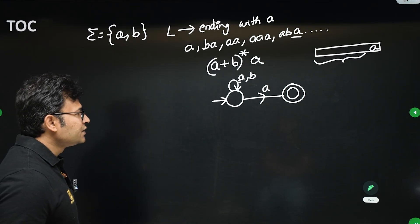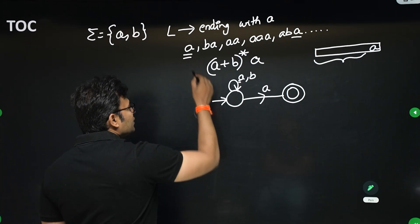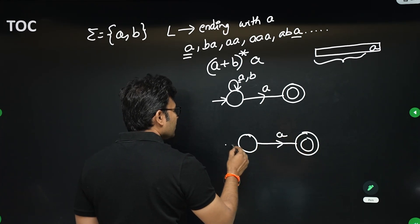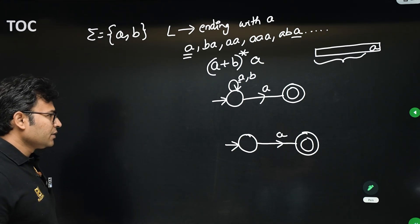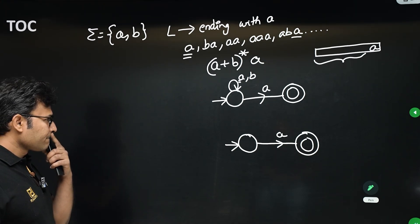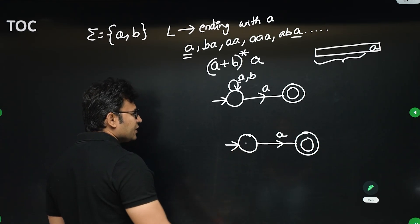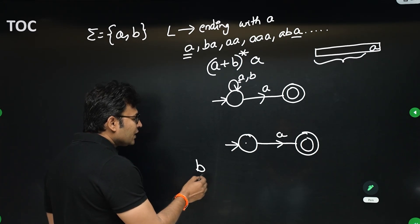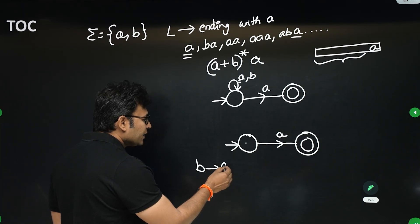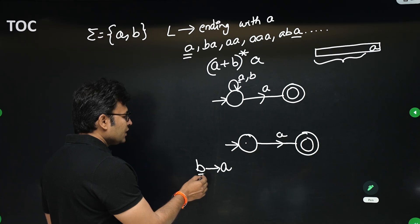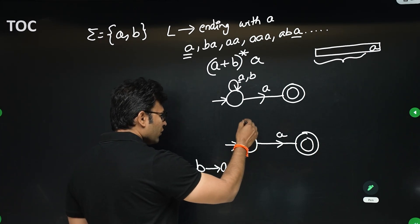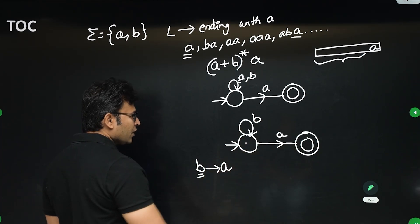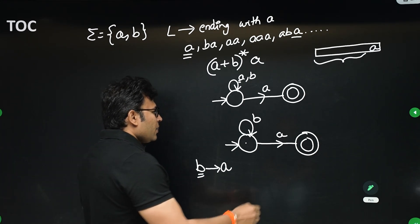Now let's do the DFA design. The smallest string in the language is 'a', so 'a' has to be accepted. If we get a 'b' initially, we don't kill it because after 'b' the string can still end with 'a' — there is hope. When there is hope, don't kill. So for any number of b's we wait for 'a'. Now this state is complete — 'a' and 'b' are defined.